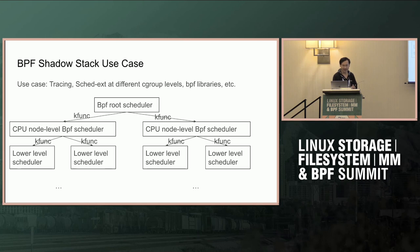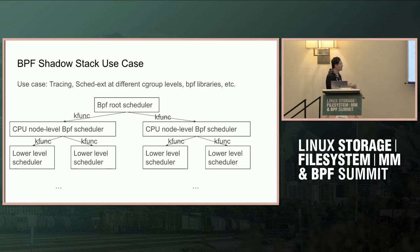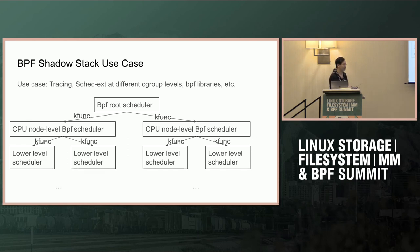This diagram basically shows the SCHED_EXT use case. You can have a BPF root scheduler, and the root scheduler will call a kfunc, and the kfunc will call a node-level BPF scheduler. You can have several different CPUs, and at the CPU level you have a scheduler. After the CPU you may have different services — say one-third of a CPU for service one, one-third of CPU for service two — so you have another level scheduler.